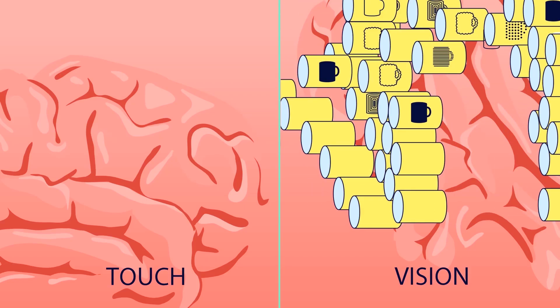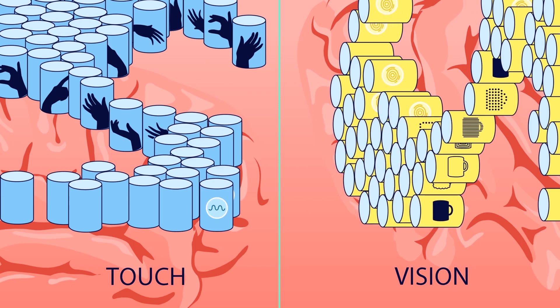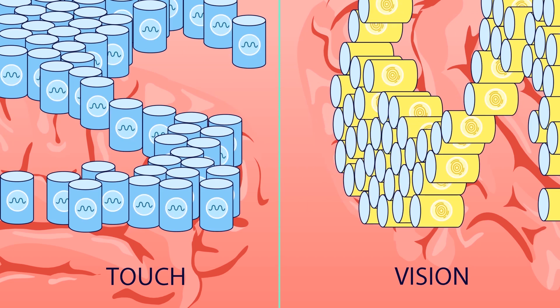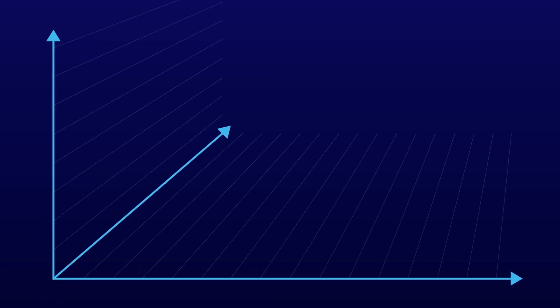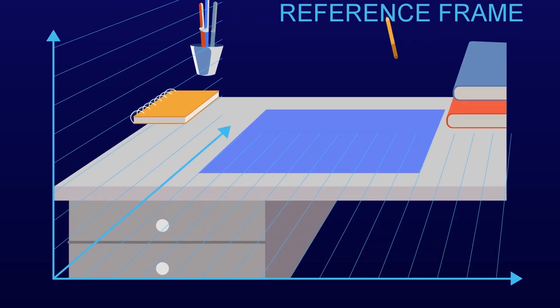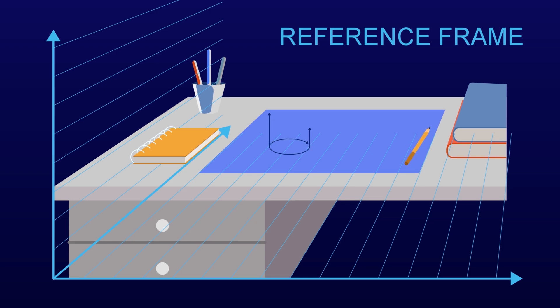But how do columns actually learn models? The neurons in each column create something called a reference frame. A reference frame is similar to a map, or similar to the X, Y, and Z axes of coordinates. The reference frames in columns allow the column to represent the three-dimensional structure of the world.